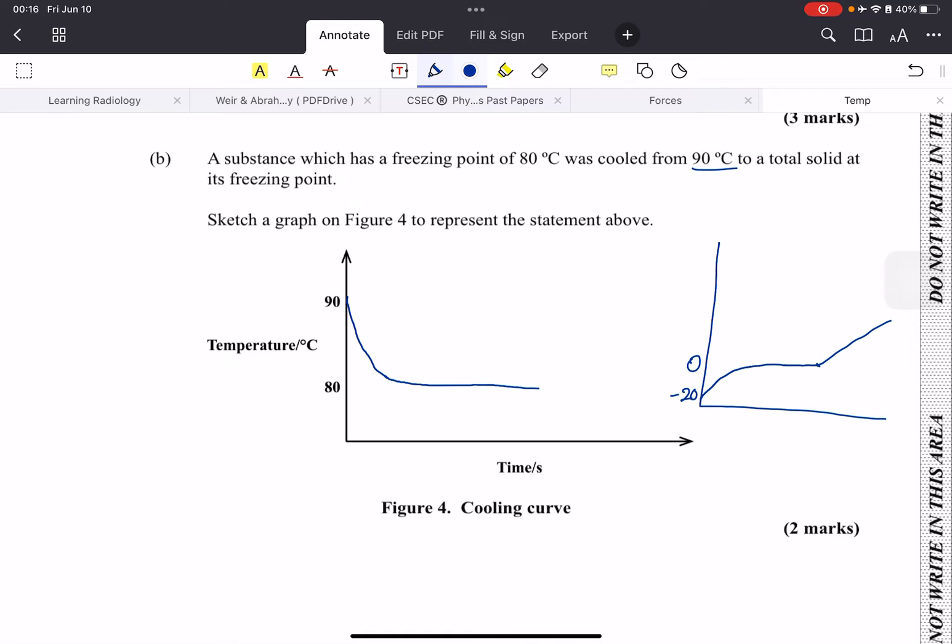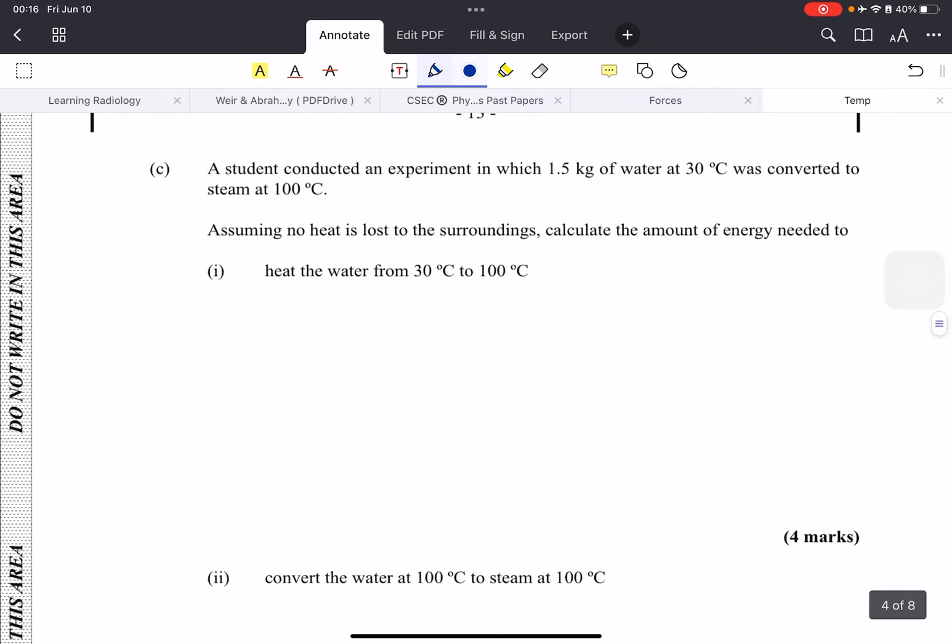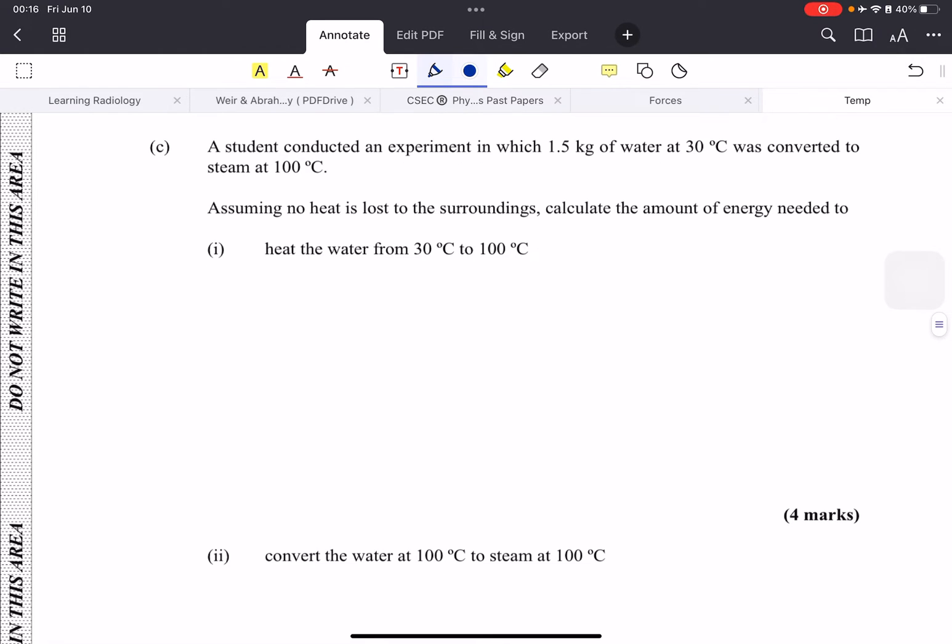Here we have some energy calculations. A student conducted an experiment in which 1.5 kg of water at 30°C was converted to steam at 100°C. Assuming no heat is lost, calculate the amount of energy needed to heat the water from 30 degrees to 100 degrees. Here we have our formula: E equals m c delta theta. Delta theta is simply the change in temperature. Energy will be the mass, which is 1.5.